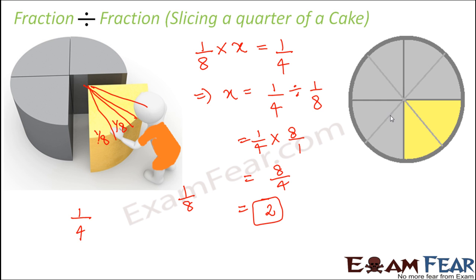This can be visualized as follows: this is your entire cake, and you are only allowed to cut the one fourth part. When you cut this part into two slices, each slice becomes one eighth of the entire cake — one part of eight equal parts. So you cut this one fourth of the cake into exactly two equal slices. These are situations where we actually encounter dividing a fraction by a fraction.